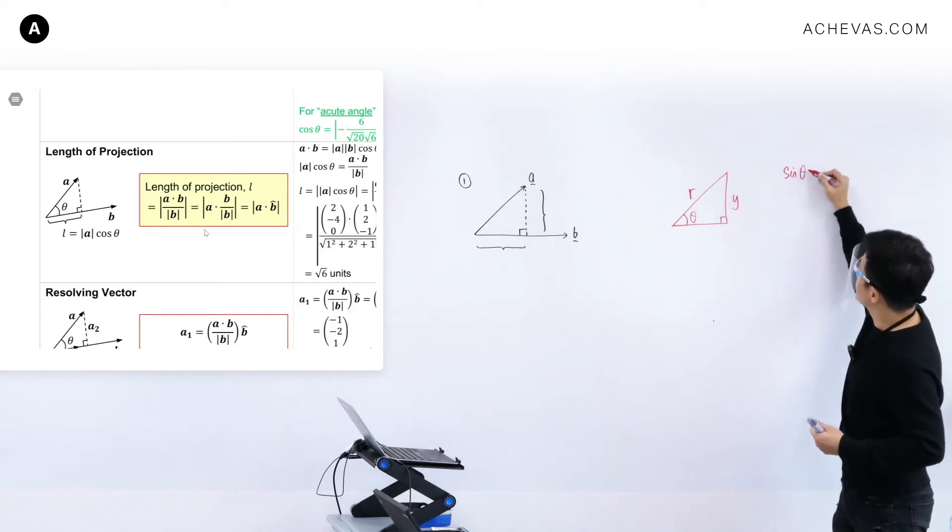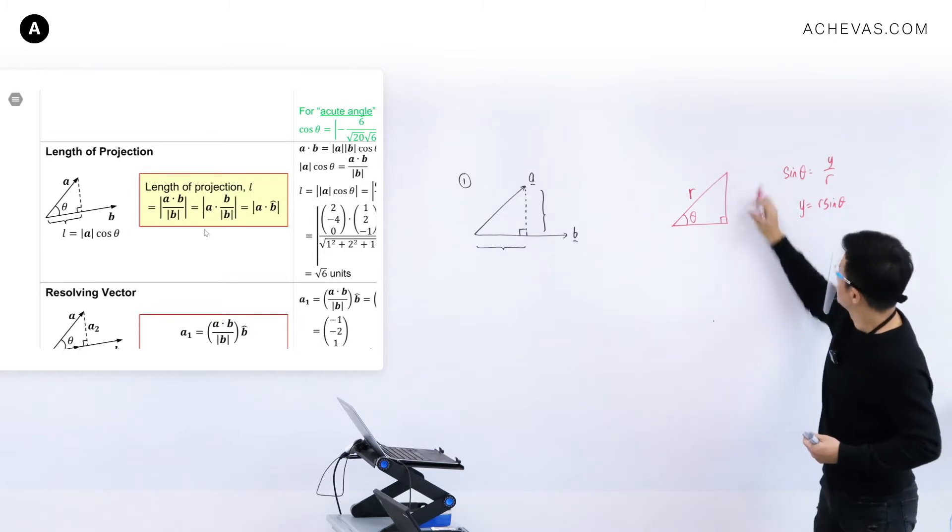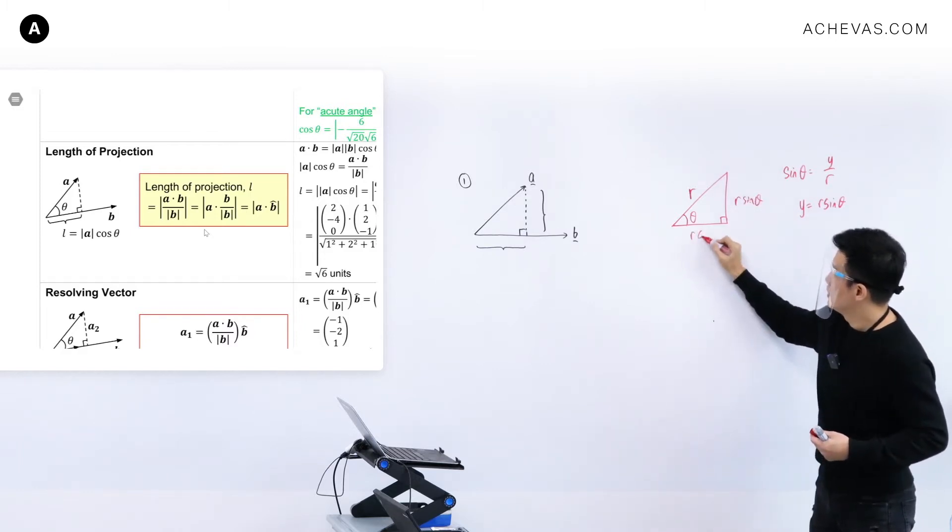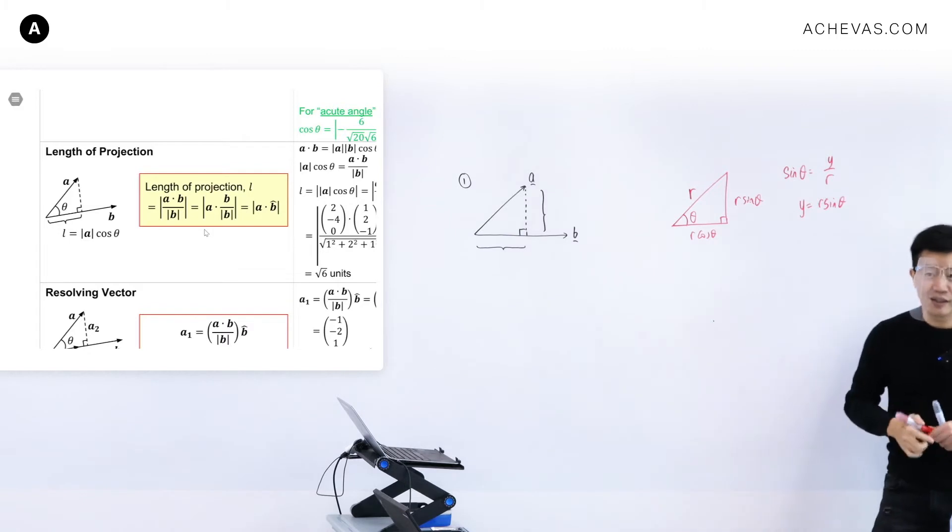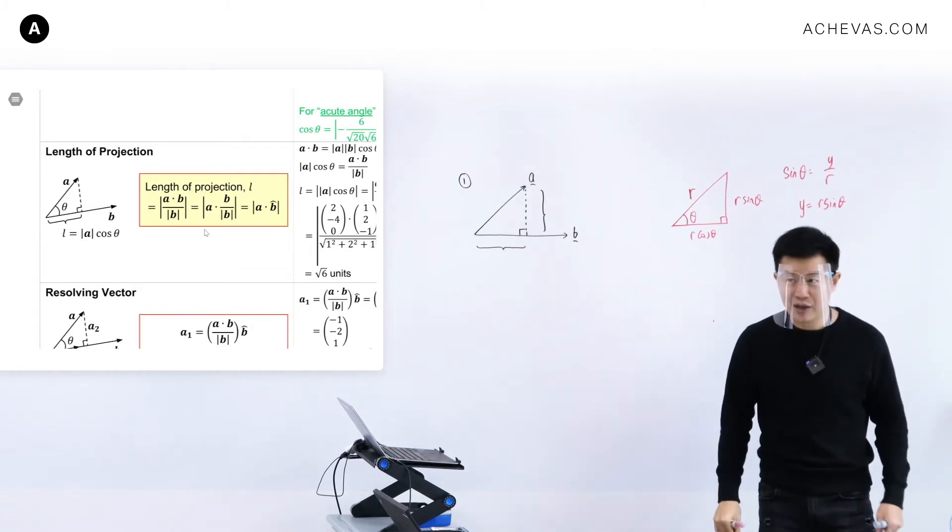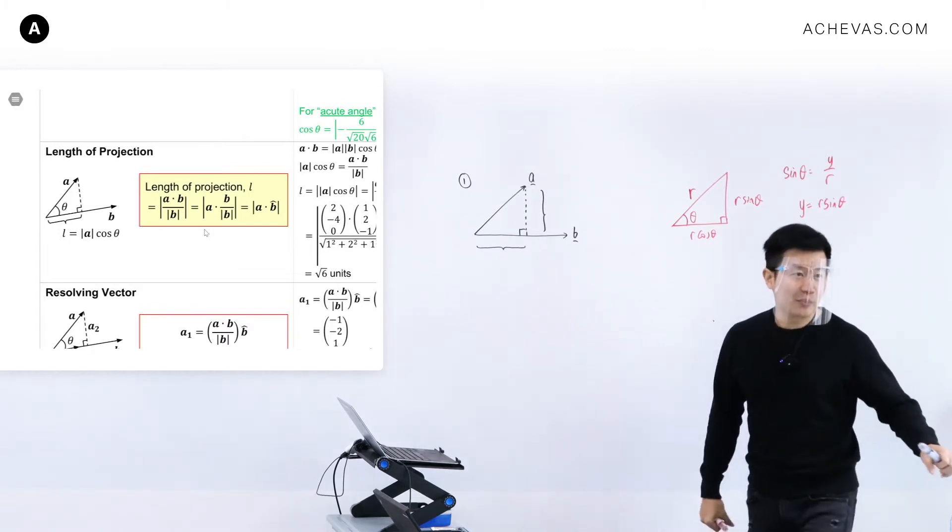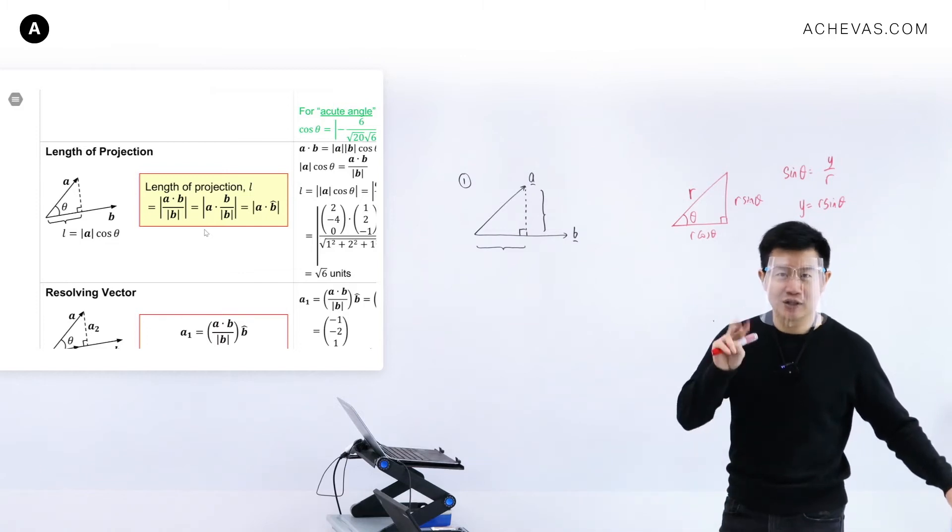Let's say this is y. So sine theta is going to be opposite over this, which means that y can be calculated by r sine theta. So here is going to be r sine theta. Here is going to be r cosine theta. These are the things that you can already do. And you are doing it pretty well, provided that it is on a 2D plane.